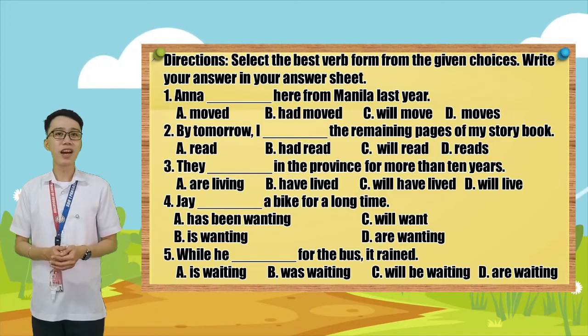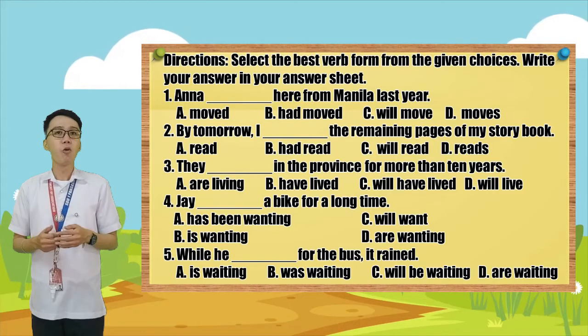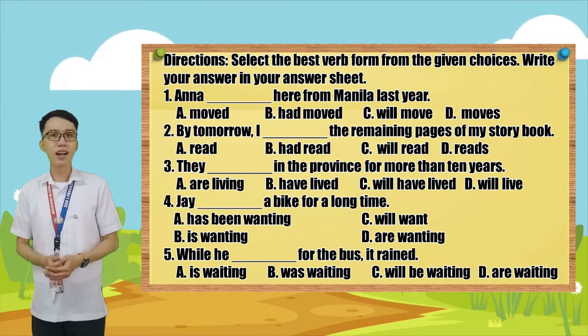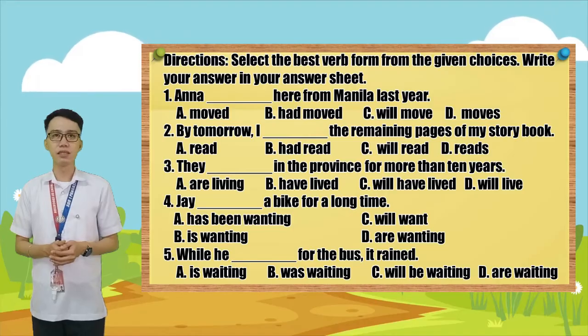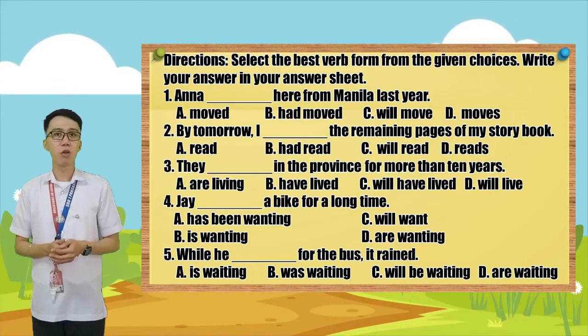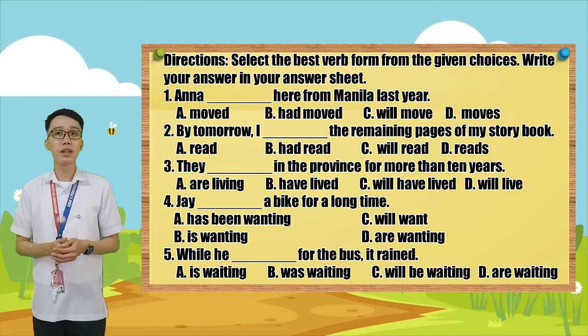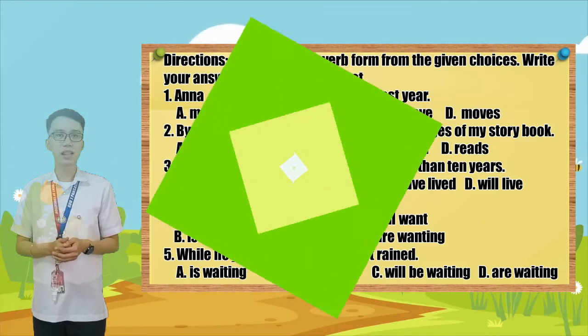Number five: While he _____ for the bus, it rained. A. Is waiting. B. Was waiting. C. Will be waiting. D. Are waiting.